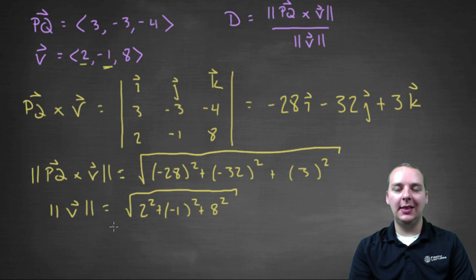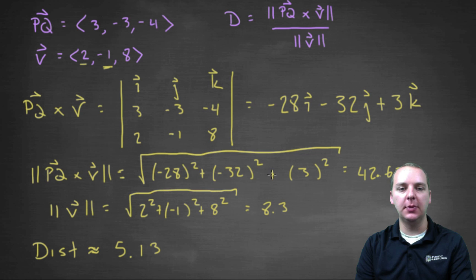Compute those two quantities and then divide them, and then this will give us our distance D. Okay, so I just paused the video so I could compute some of these quantities here. The cross product turned out to be forty-two point six three, the magnitude of the cross product that is. The magnitude of vector V turned out to be around eight point three. And so when you take the magnitude of the cross product divided by the magnitude of V, I got a distance of about five point one three, five point one three.